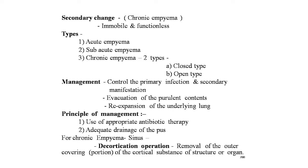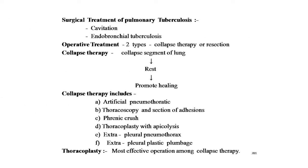Surgical treatment of pulmonary tuberculosis: introduction of various anti-tubercular drugs has minimized the scope of surgery. Indications include cavitation and endobronchial tuberculosis. Operative treatment has two types: collapse therapy and resection. Collapse therapy means collapsing the diseased lung segment to promote healing. Collapse therapy includes artificial pneumothorax, thoracoscopy and section of adhesions, phrenic nerve crush, thoracoplasty with apical lysis, extrapleural pneumothorax, extrapleural plombage — thoracoplasty is the most effective operation among collapse therapies.